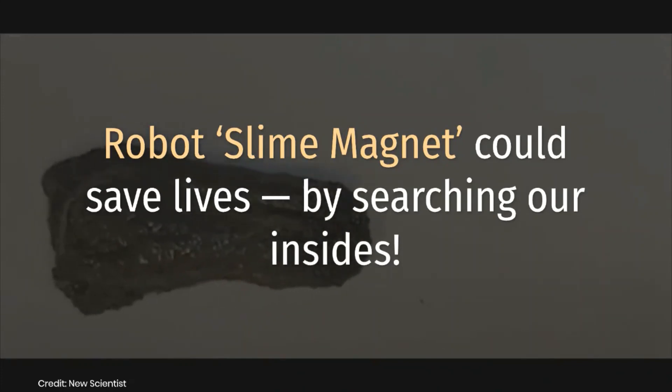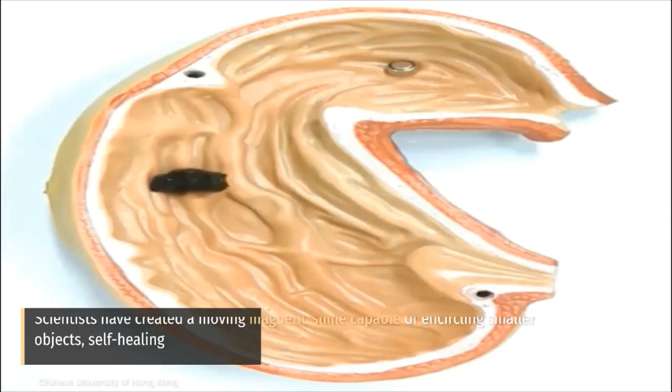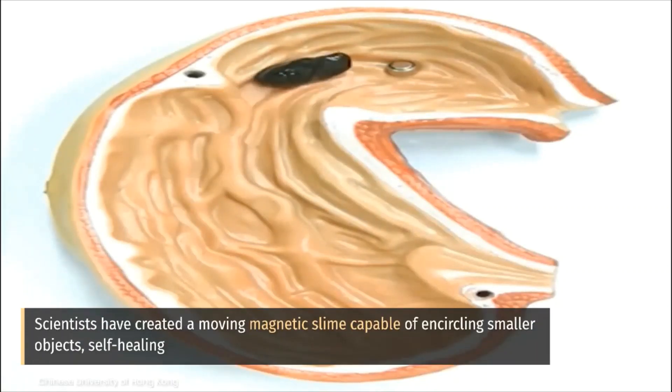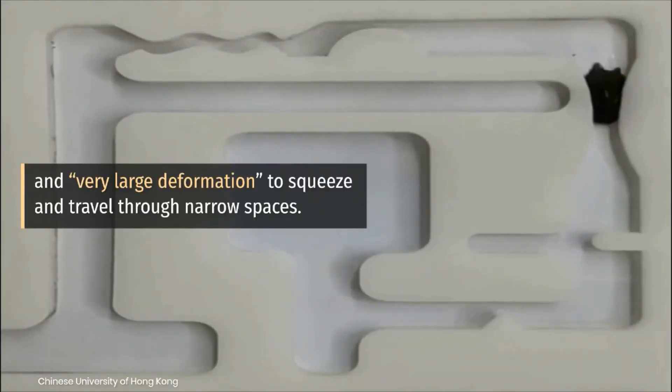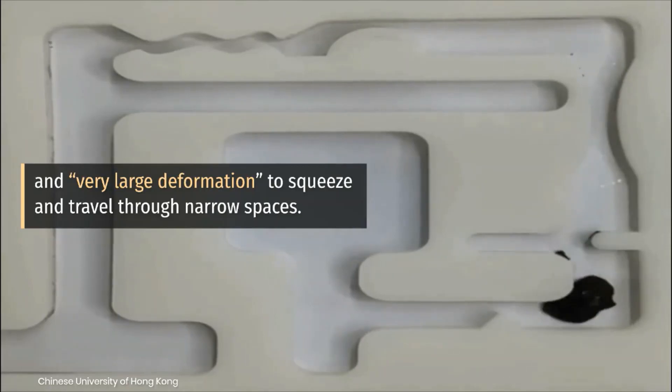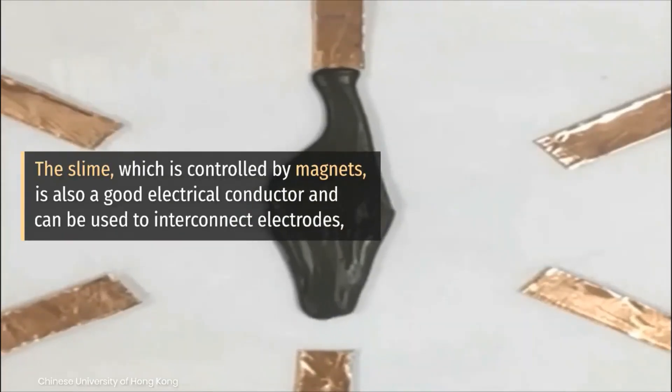Scientists have created a moving magnetic slime capable of encircling smaller objects, self-healing, and very large deformation to squeeze and travel through narrow spaces. The slime, which is controlled by magnets, could save lives by searching our insides.